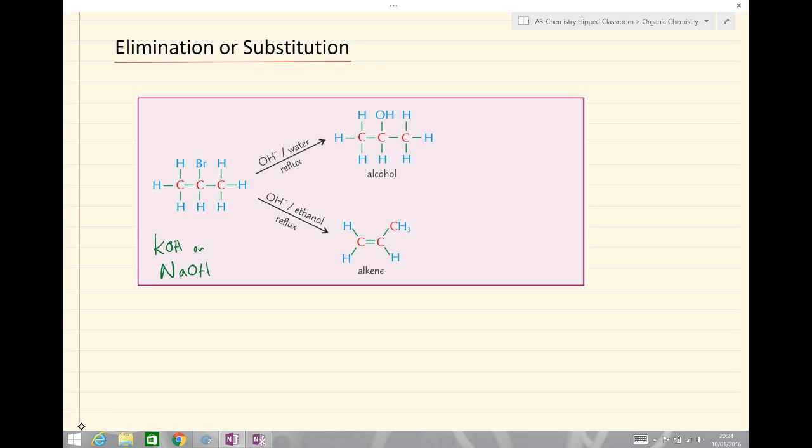We have two possible reactions when we have potassium hydroxide or sodium hydroxide and our halogenoalkane. Here we've got 2-bromopropane. If we have OH⁻ dissolved in water and we do this in reflux conditions—and we'll talk about reflux in a future lesson—then we get a nucleophilic substitution reaction and we form the alcohol group. And in this reaction the hydroxide ion is acting as a nucleophile and attacking the delta-positive carbon.